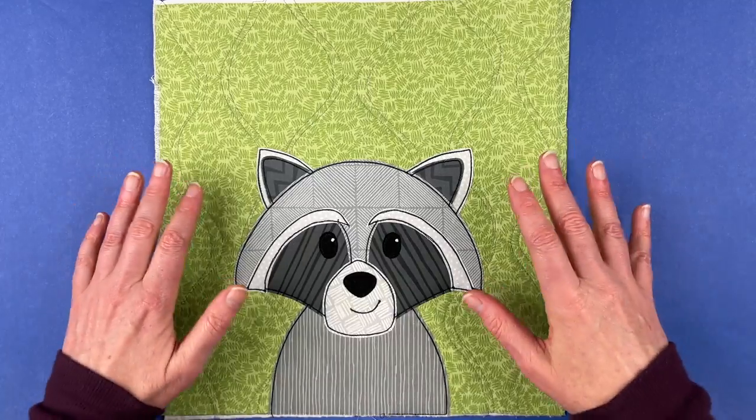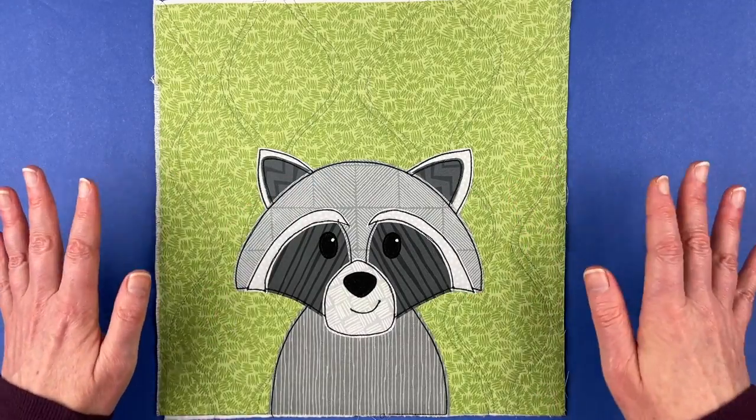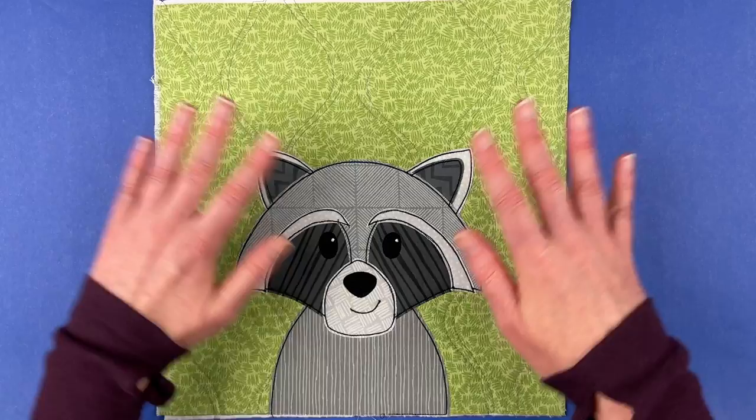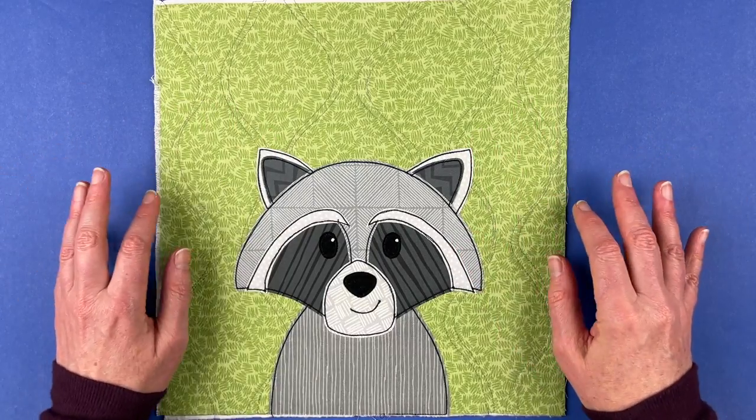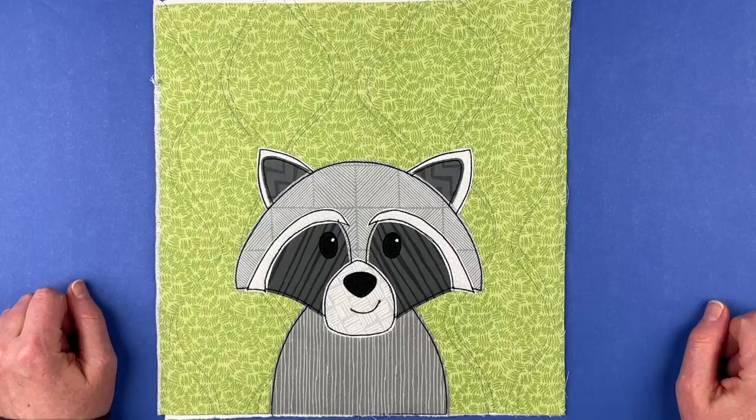So this is one block in the Woodland Critters quilt pattern, which is a larger quilt pattern that includes a whole bunch of different forest animals. But in this video we're just going to work on the raccoon.